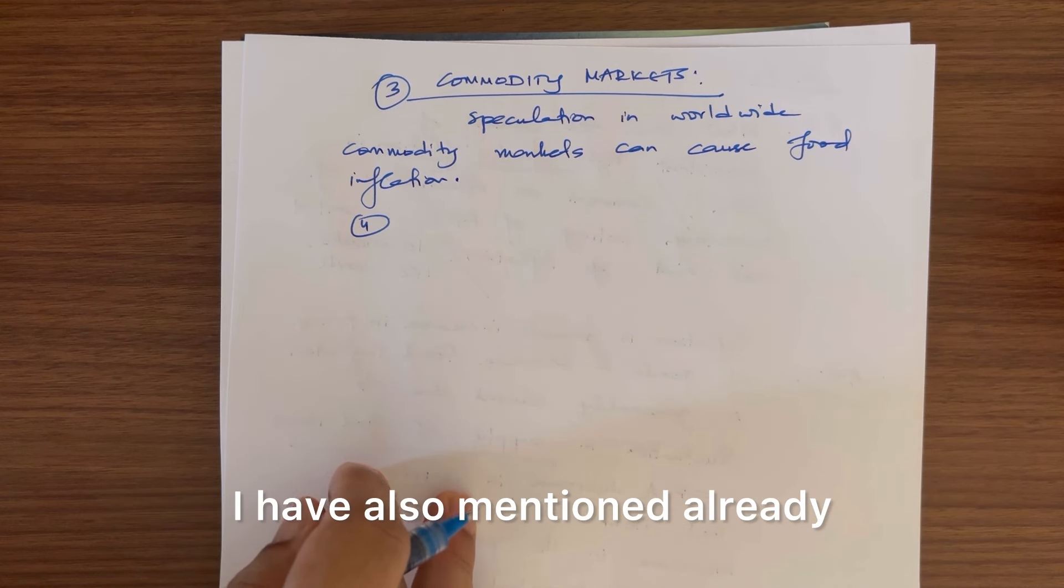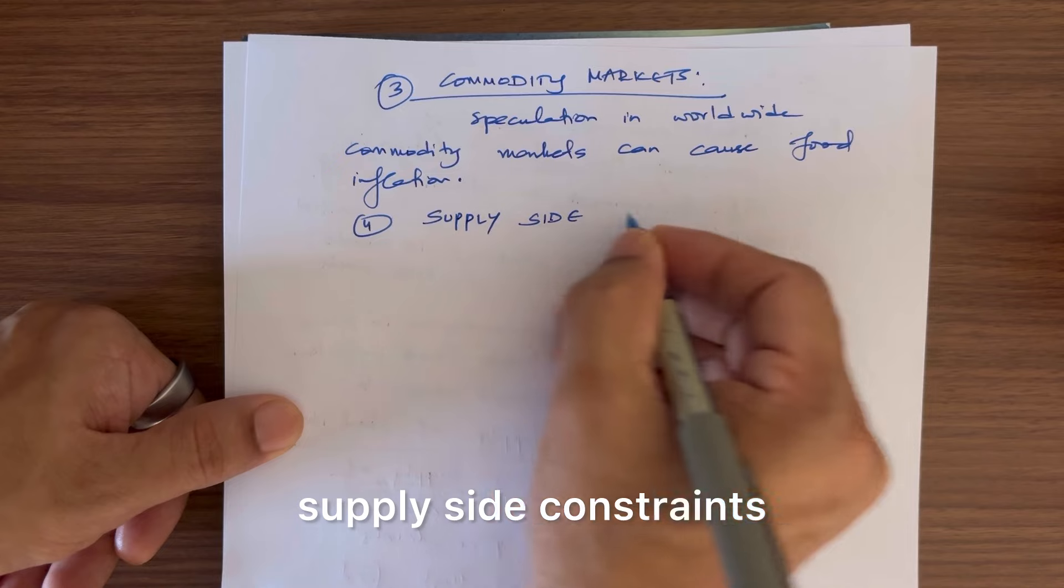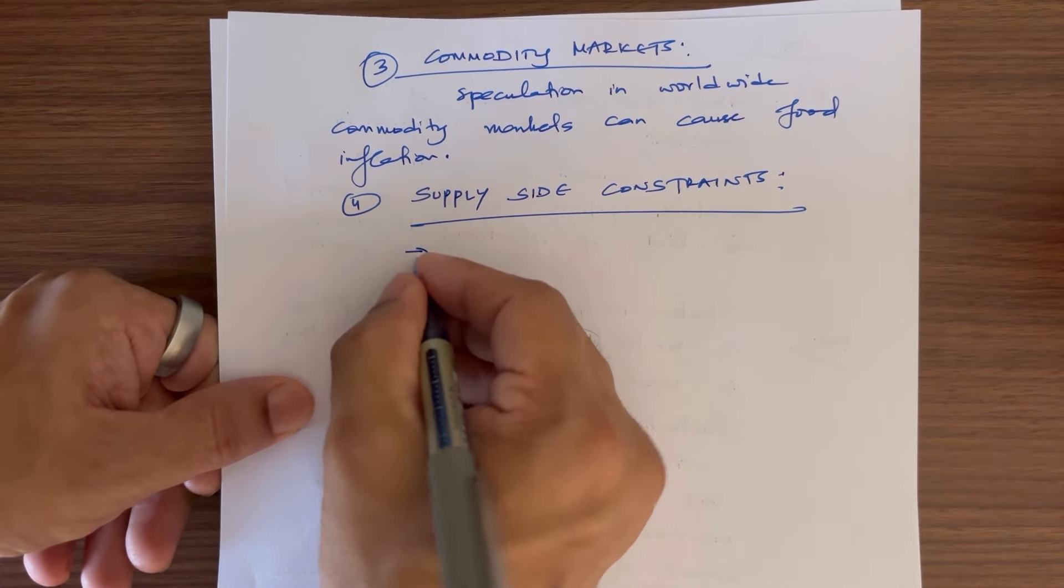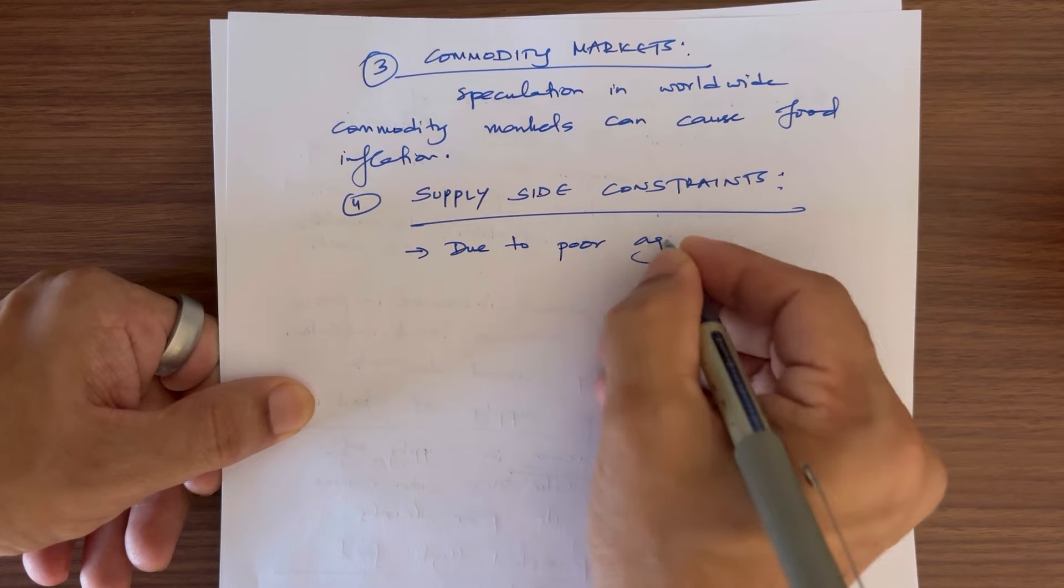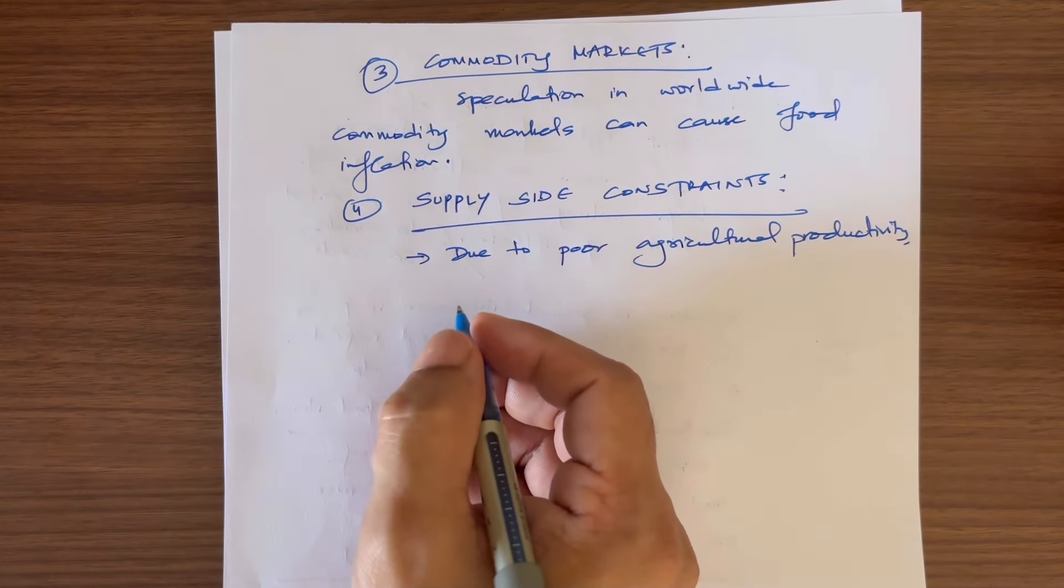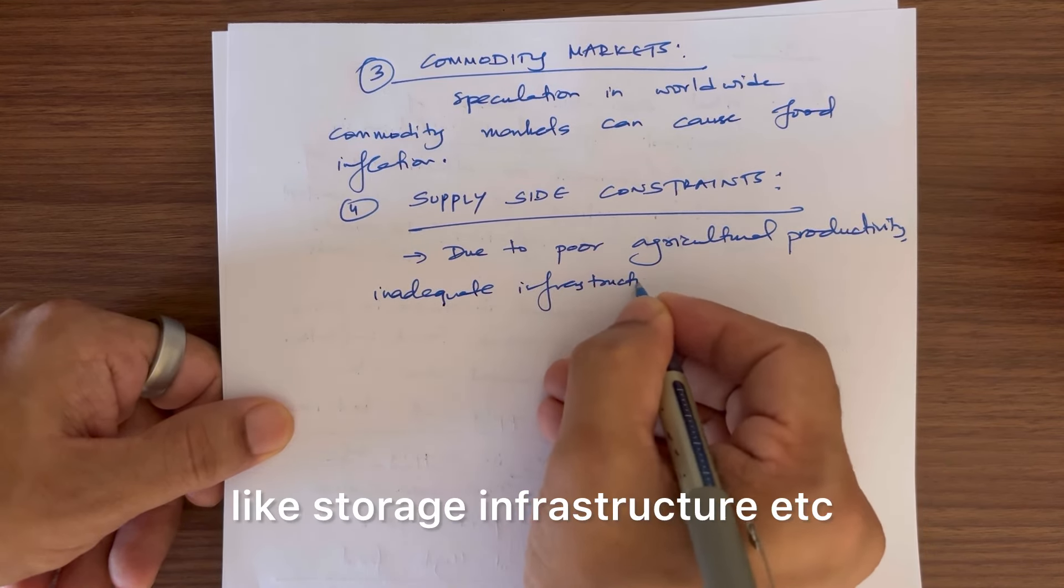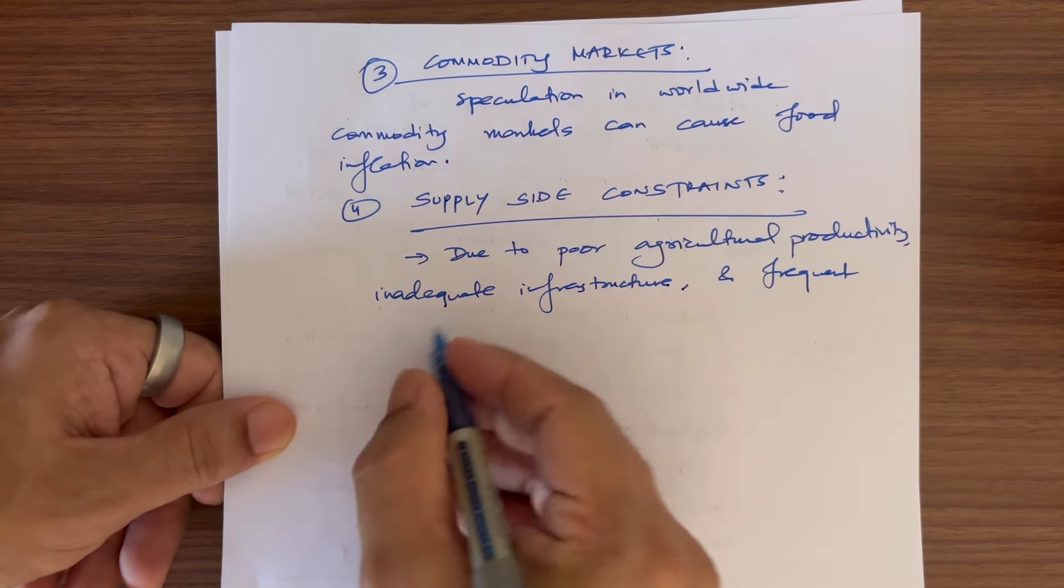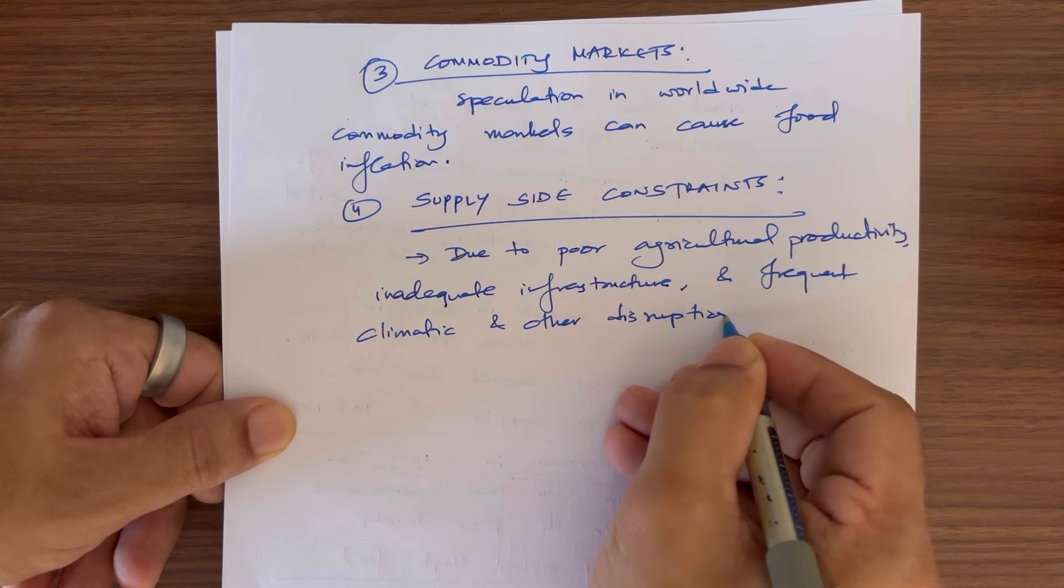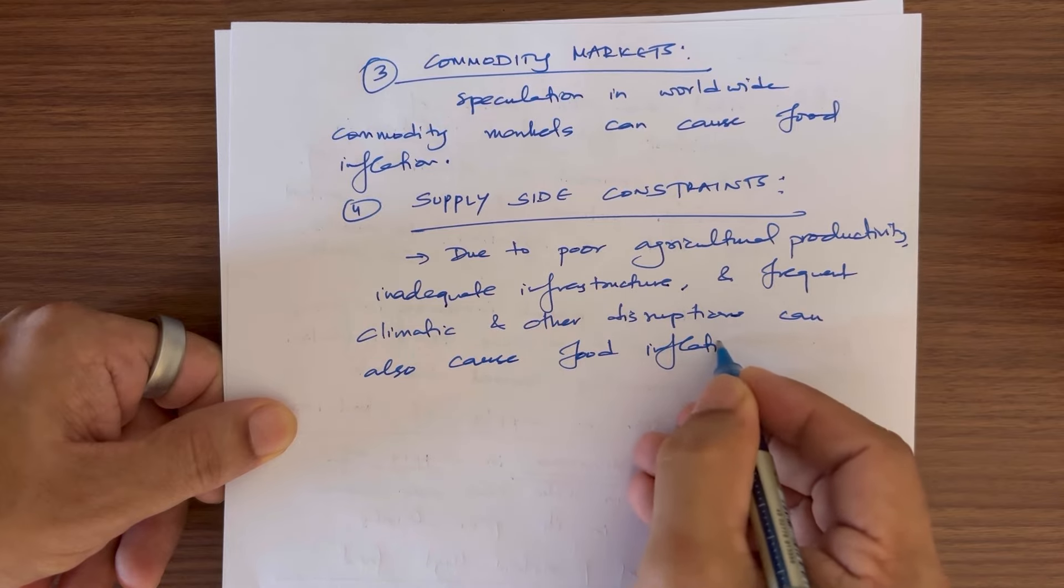Then, you can also write about supply side. I have mentioned already, but you can write more. Supply side constraints - here, due to poor agricultural productivity, inadequate infrastructure like storage infrastructure, and frequent climatic and other disruptions can also cause food inflation.